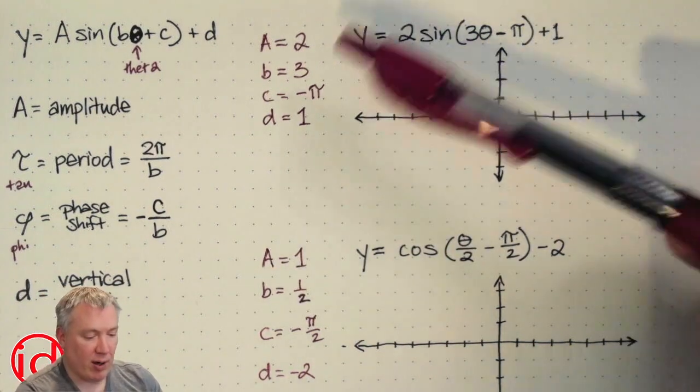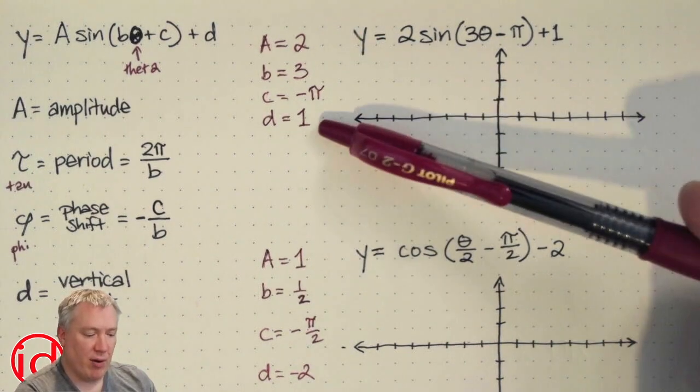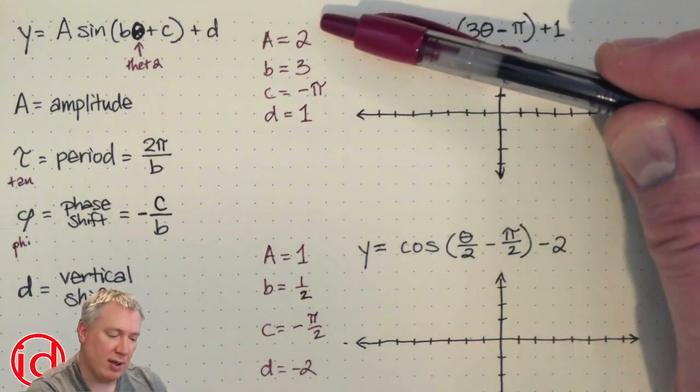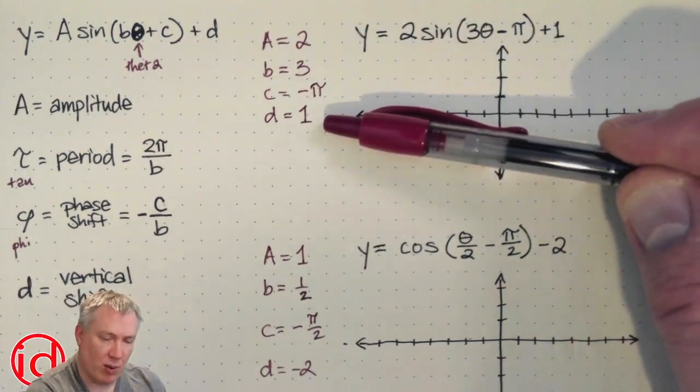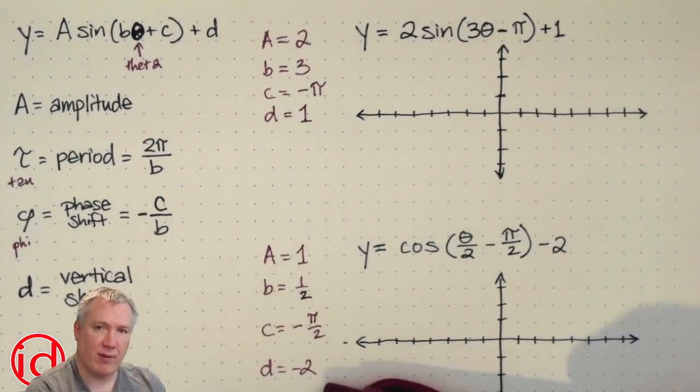Now from here, we can already tell what the amplitude and the vertical shift is. Amplitude is 2, and the vertical shift is 1. Amplitude is 1, vertical shift is negative 2.